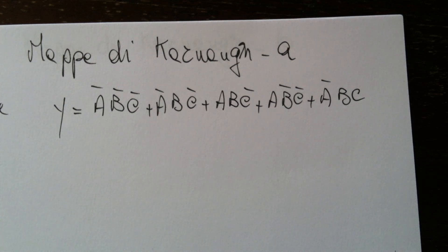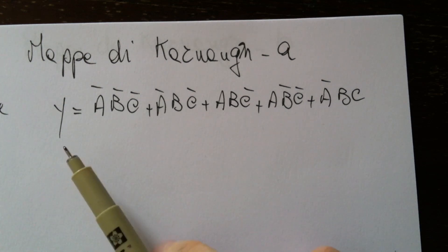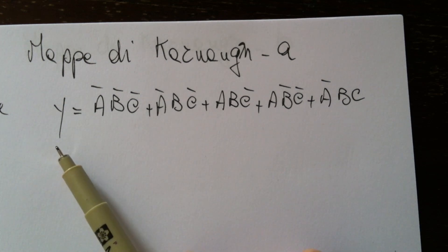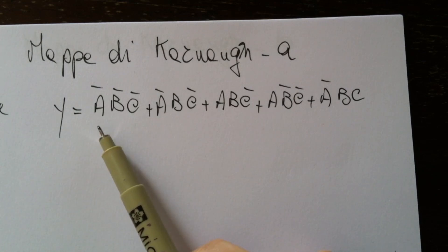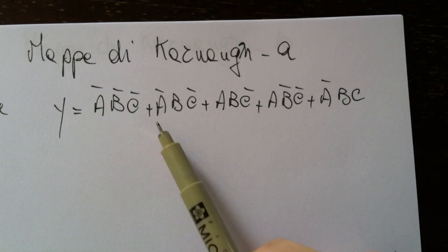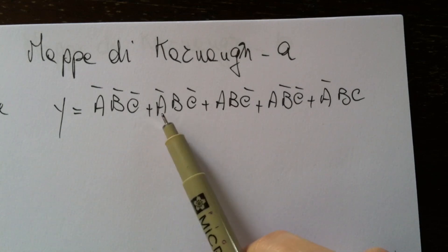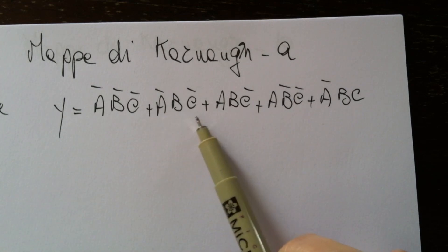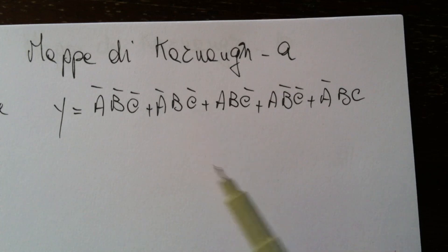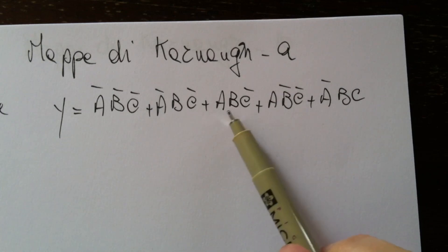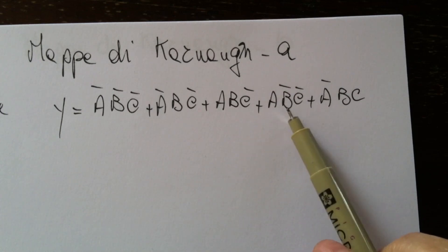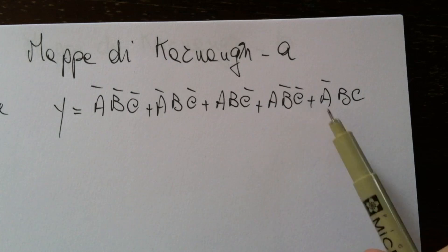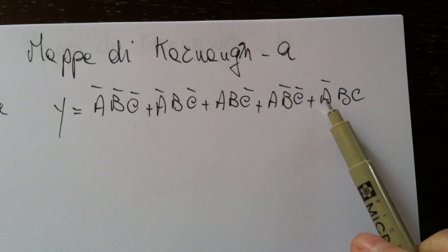We have to realize the circuit that satisfies this function: y equals NOT A · NOT B · NOT C, plus NOT A · B · NOT C, plus A · B · NOT C, plus A · NOT B · NOT C, plus NOT A · B · C.